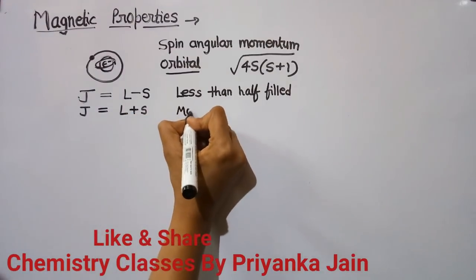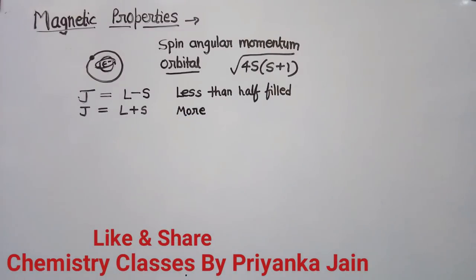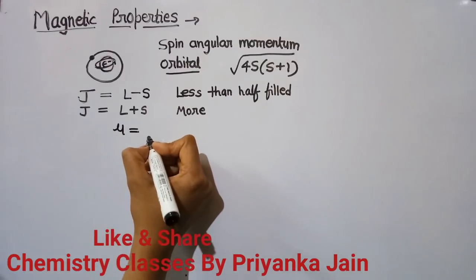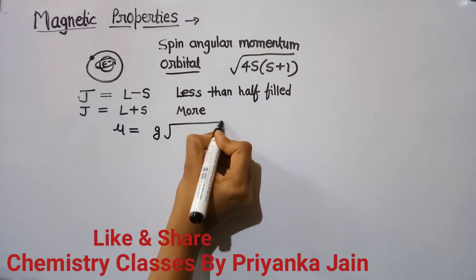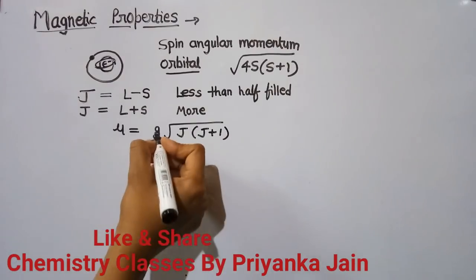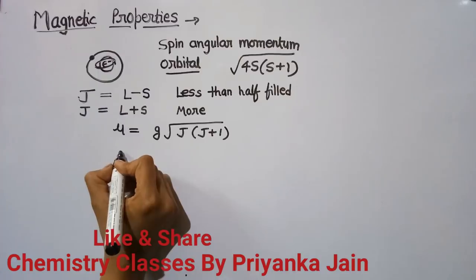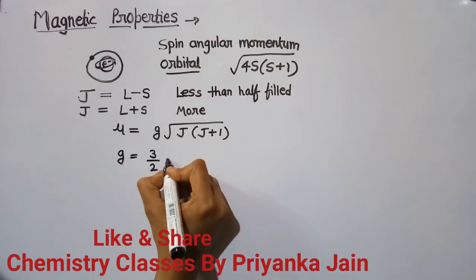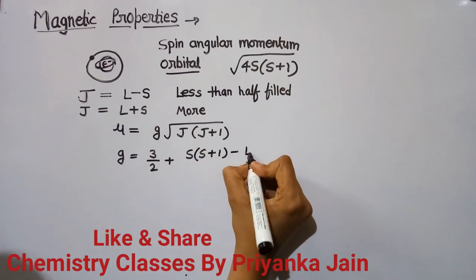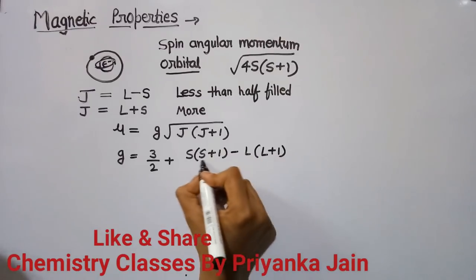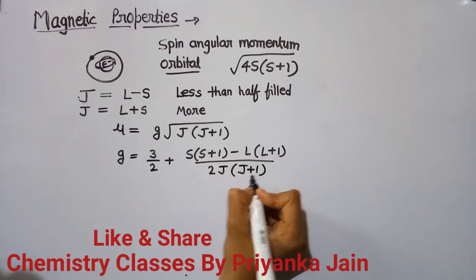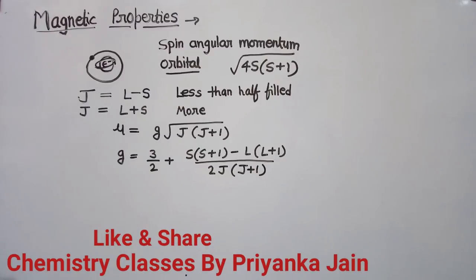The magnetic moment for lanthanides is given by μ = g√(J(J+1)), where g is the Landé splitting factor given by: g = 3/2 + [S(S+1) − L(L+1)] / [2J(J+1)]. These two formulas are used to calculate the magnetic moment of lanthanides.